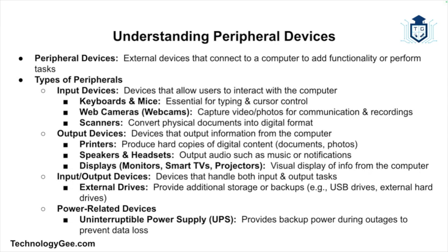Here are some common peripheral devices and their functions. Printers are output devices that produce hard copies of digital documents, photos, or other content. Scanners are input devices used to convert physical documents into digital format. Keyboards and mice are essential input devices for interacting with your computer. Webcams are input devices for capturing video or photos, often used for video calls. External drives — such as external hard drives or USB drives — are used for backup or additional storage.